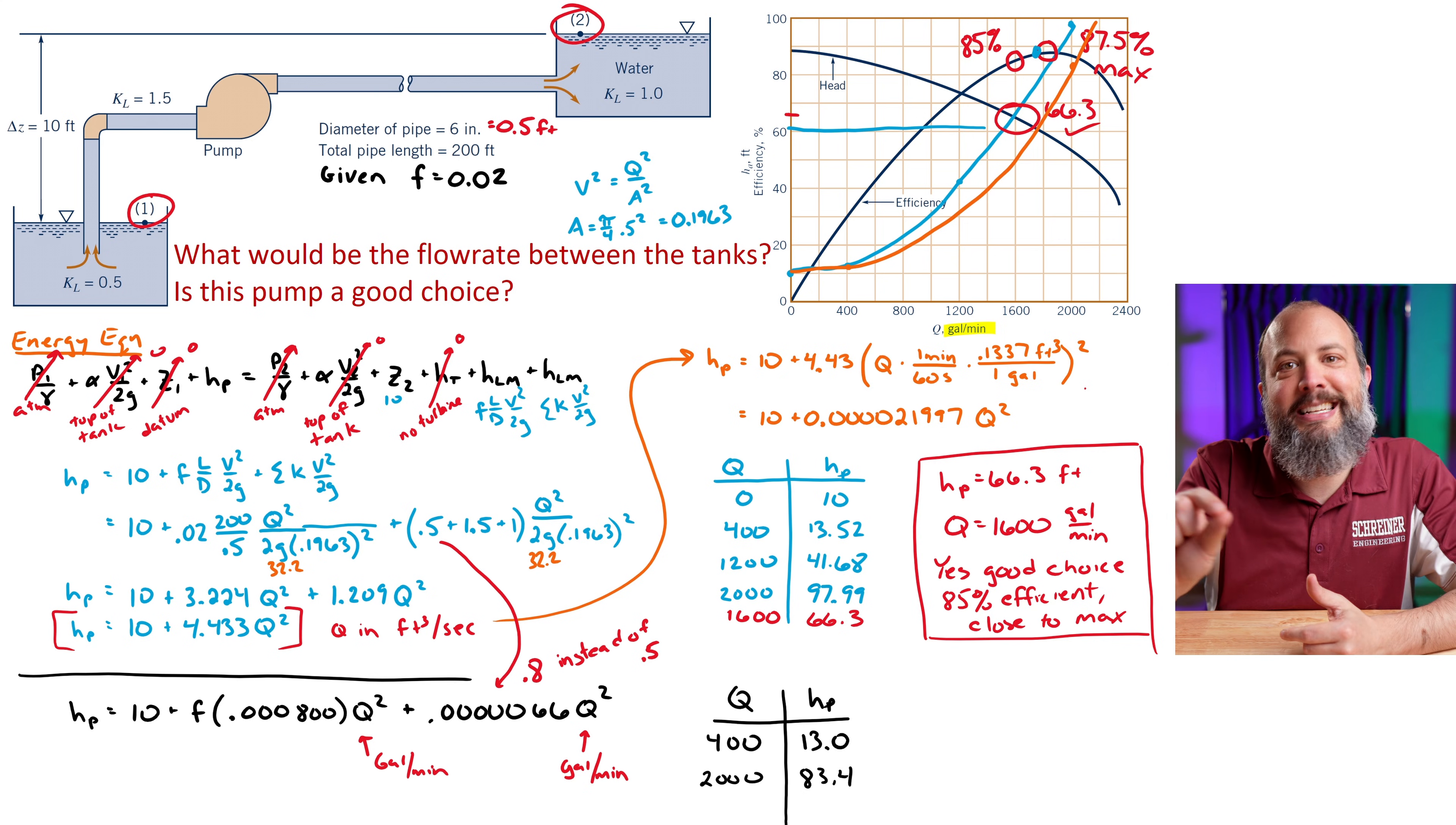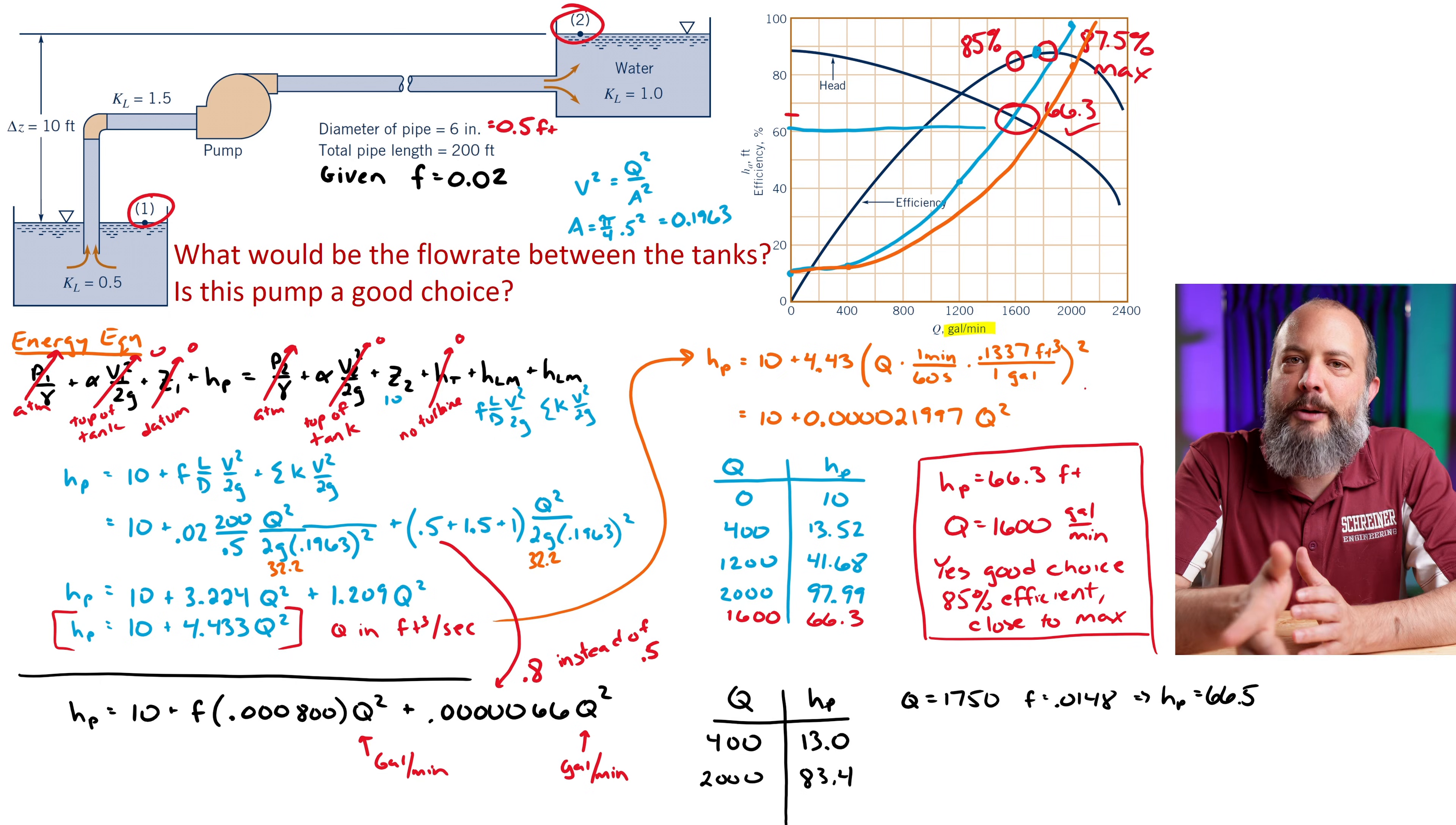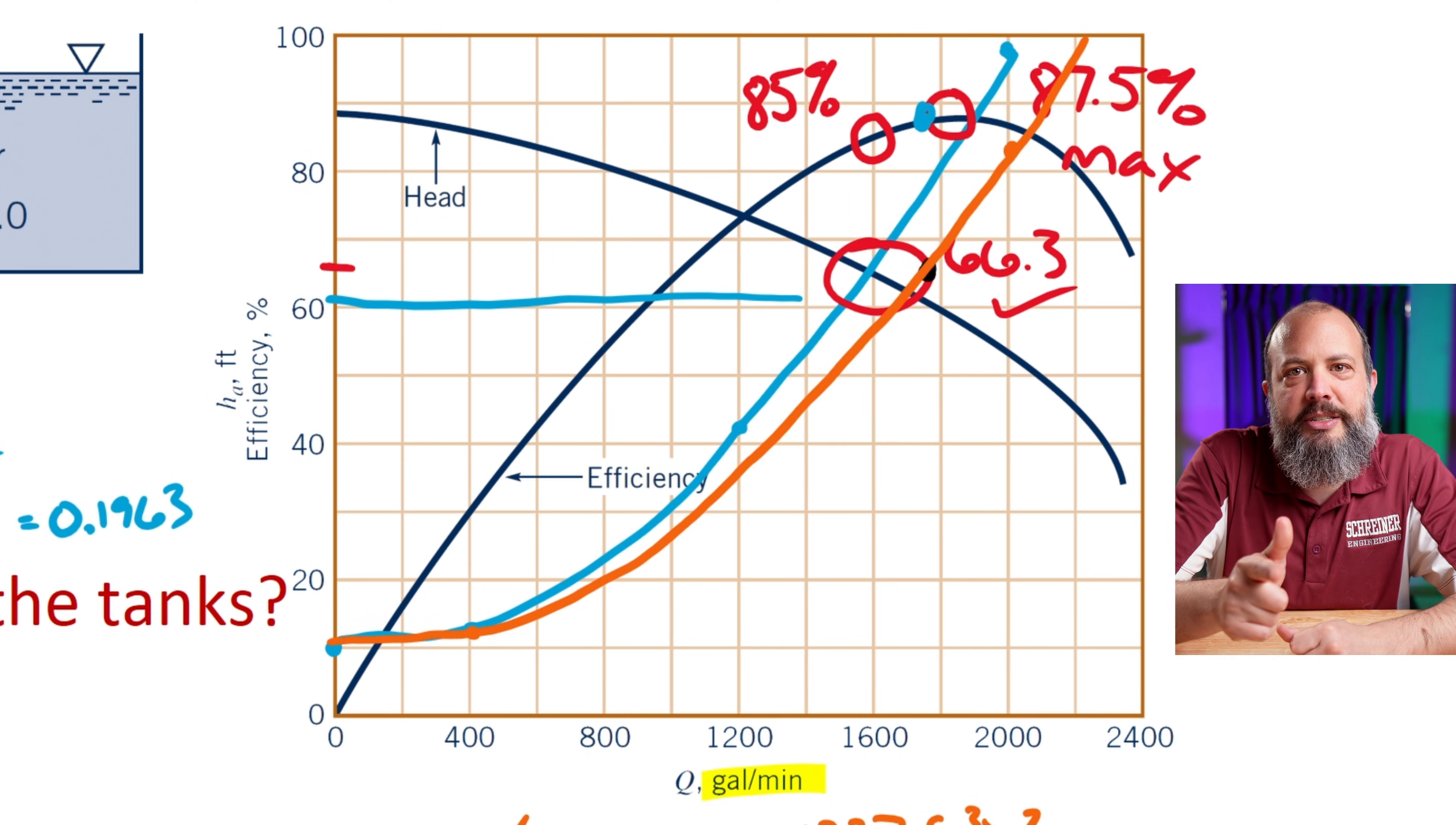So since 1750 is pretty close to the 2000, I'm not going to go calculate another Reynolds number. I'm just going to use 0.0148 as my friction coefficient, which is pretty close to the 2000 number, but in between the two. And I get a pump head of 66.5. Now, when I plot that on the drawing, that point is noticeably above the pump curve. So this means I need to redraw my line to be a little bit more accurate to be able to see a little bit better where the answer probably is.